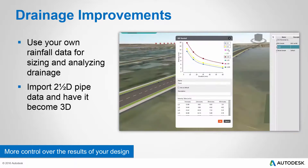Another capability in this new release is the ability to import 2.5D pipe data. If you've got GIS data where pipes and structures are defined in 2D but there are attributes attached that define inverts, we can now import that data and have it become full 3D pipe and structure data in the InfraWorks 360 model.